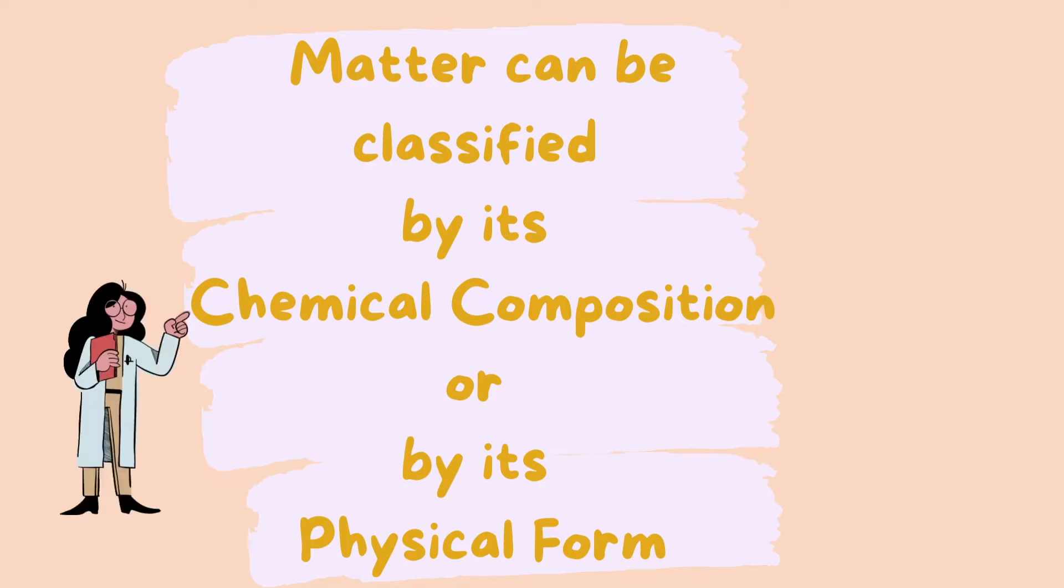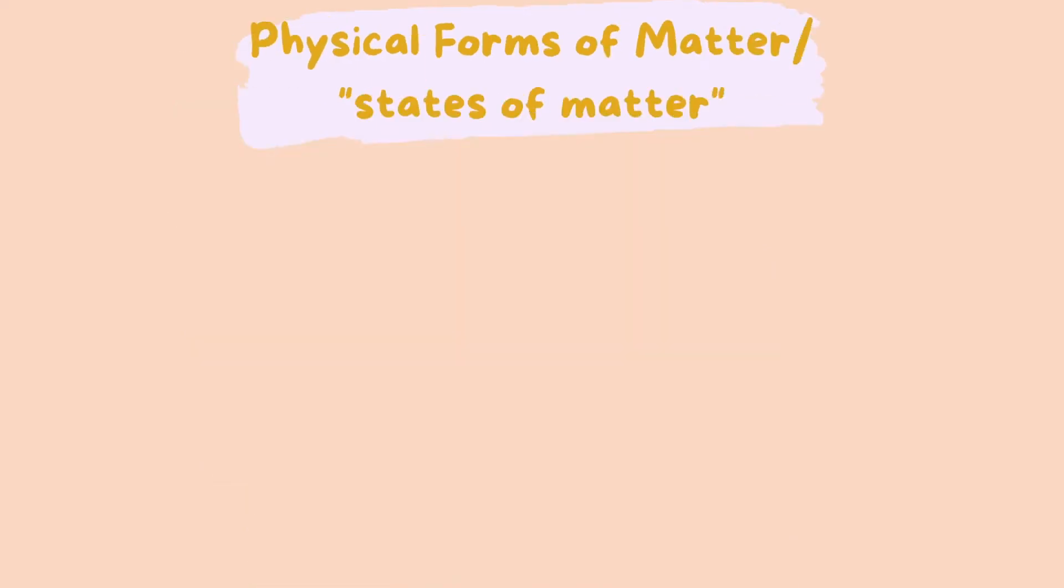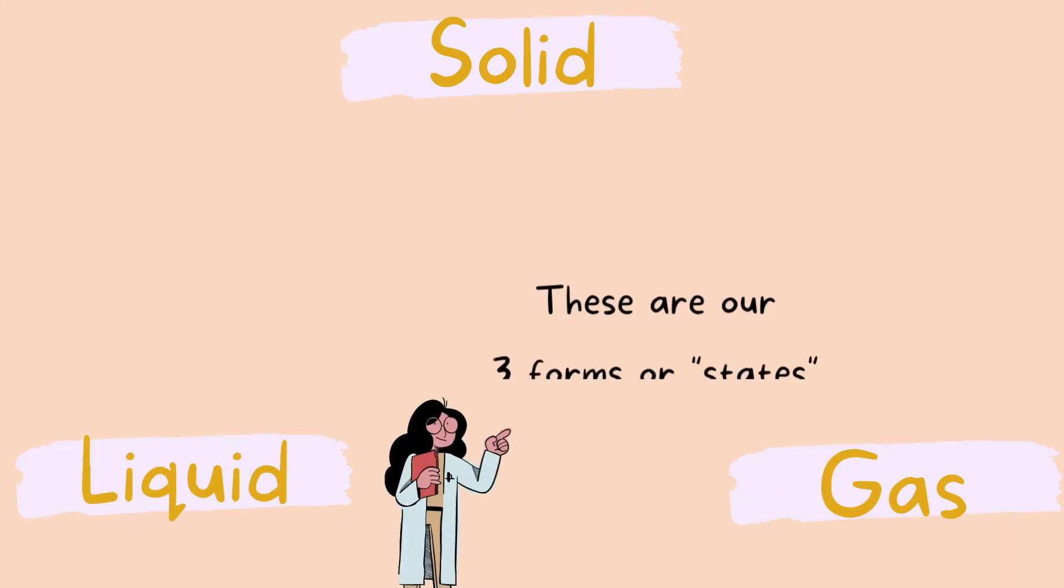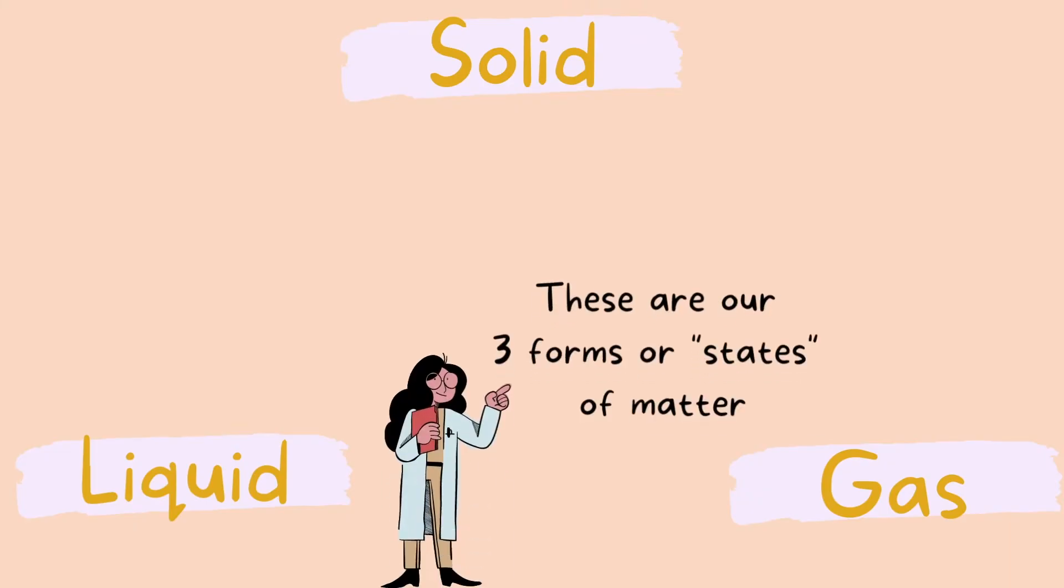Matter can be classified by its chemical composition, but also by its physical form. Physical form of matter is also called state of matter. I just like to use the word forms because I think it is a better interpretation of the concept. These are our three forms of matter or states of matter: solid, liquid, and gas.